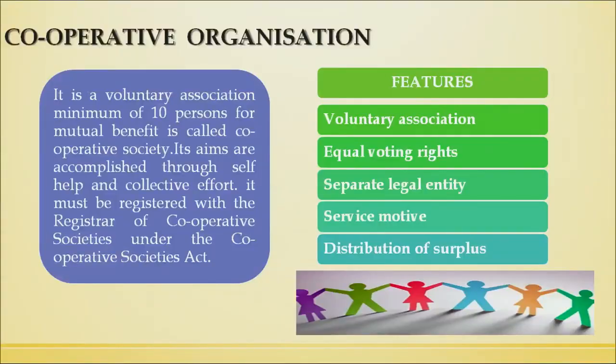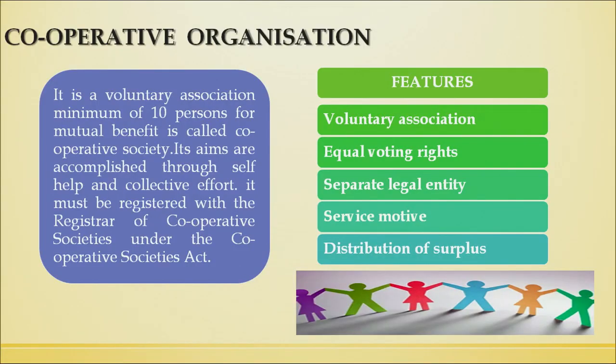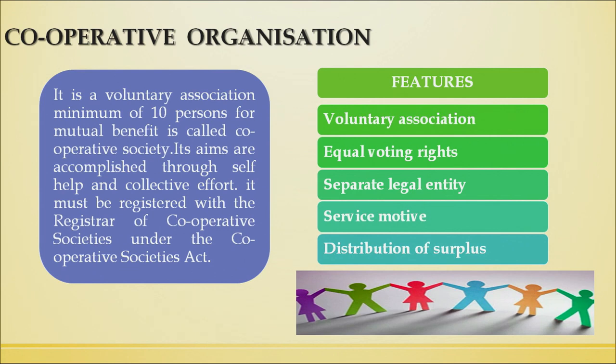Features of cooperative society: the first is voluntary association — any person who wants to be part of a cooperative society can submit an application, contribute their share, and become a member. The second feature is equal voting rights — every member has equal voting rights regardless of how much share capital they have contributed. Cooperative society is a separate legal entity and does not get affected by the coming and going of members. It is set up with a service motive and profits are shared equally or in proportion to members' contributions.